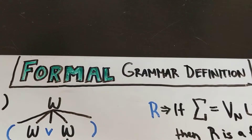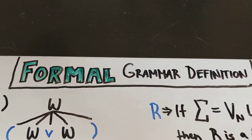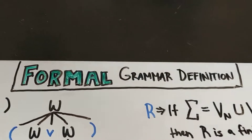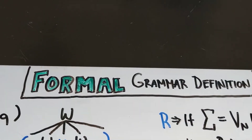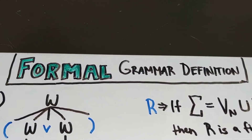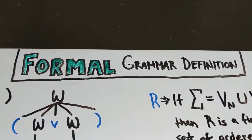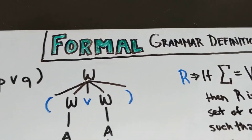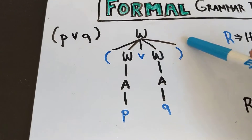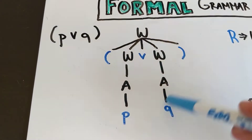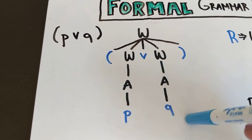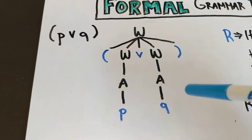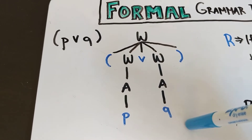Hello, and welcome to another lesson about formal language theory. In the last video we started talking about what we mean by rules in a formal grammar, and in this video we are going to talk a lot more about the details of defining a formal grammar, and how we define those rules. In the last video we made several tree structures showing how we can derive a string based on a series of rules, and we used as our example the rules of propositional logic.